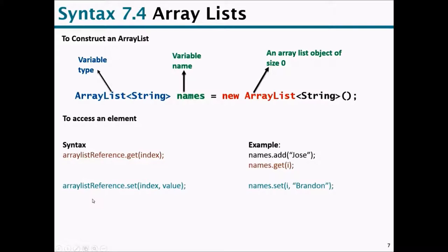Another way to access an element is using the set method, which changes the element in the ArrayList. To change a value at an index, you need to know the index and the replacement value. For example, names.set(i, "Brand") changes whatever value is at index i to 'Brand'.